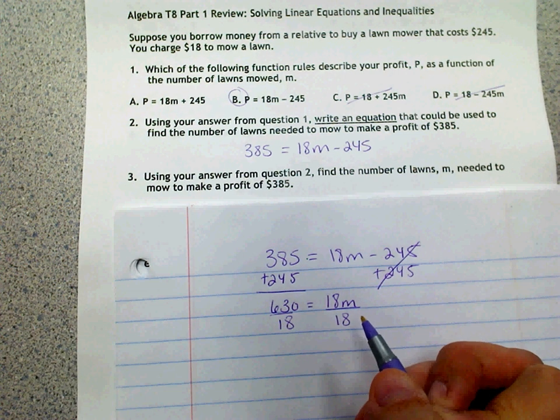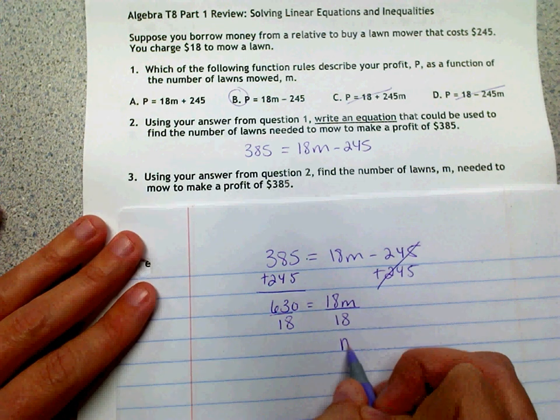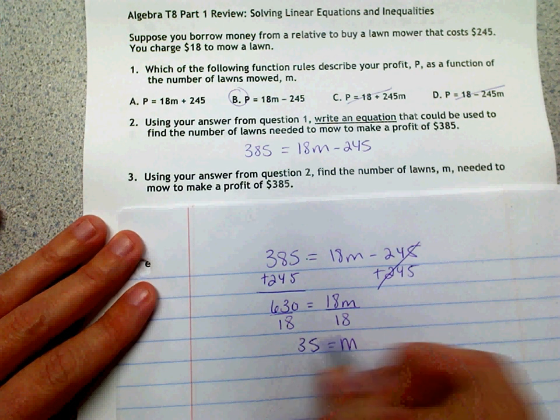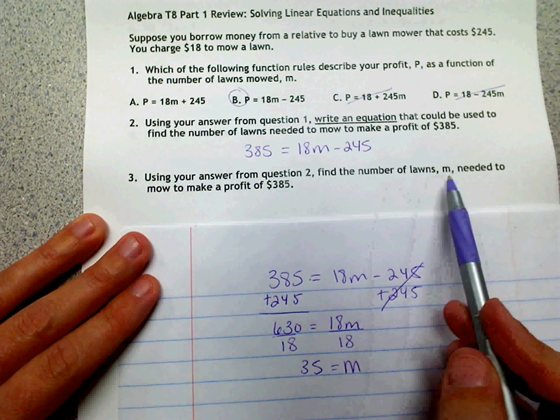And $630 divided by 18 is 35. So M equals 35. So that means on question three, it says find the number of lawns he needs to mow.